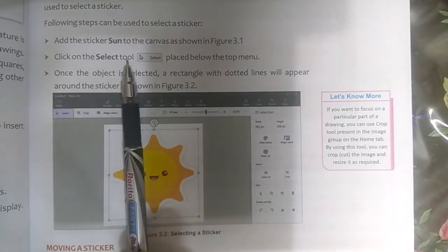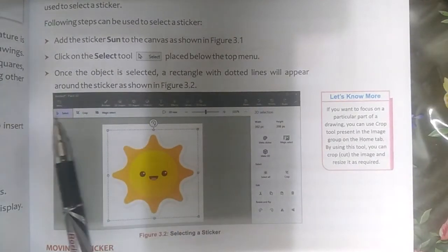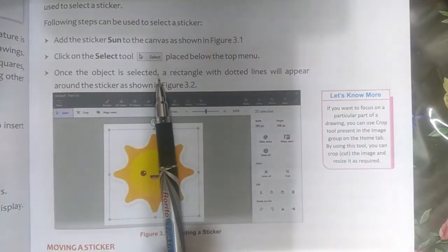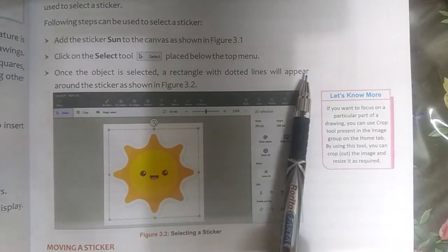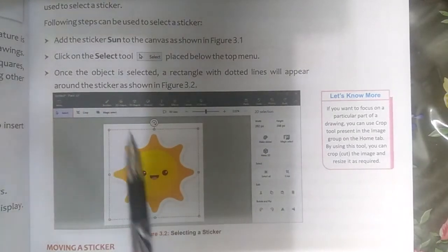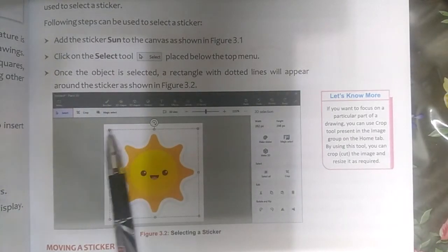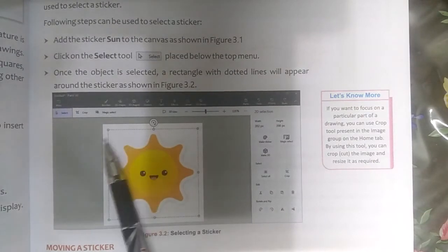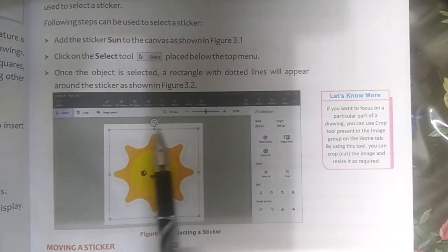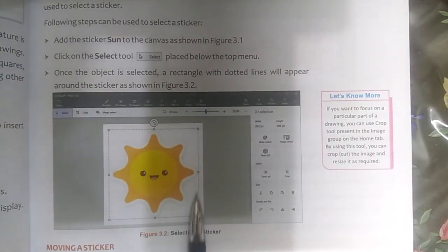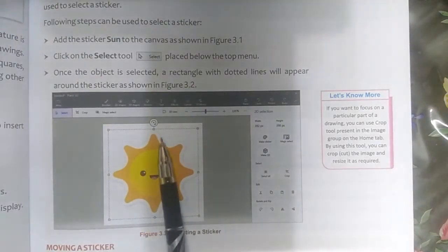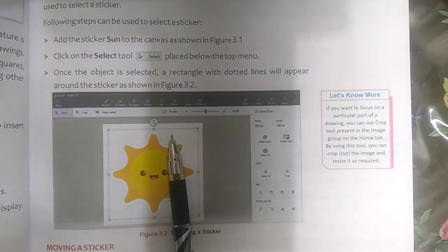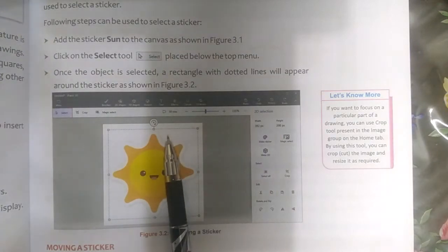Click on the select tool. Once the object is selected, a rectangle with dotted lines will appear around the sticker. You can see these dotted lines around the selected sticker — this is your selected tool indicator.